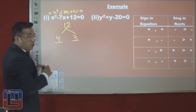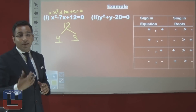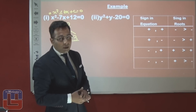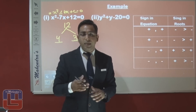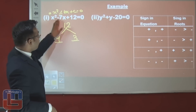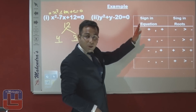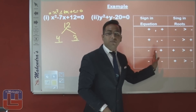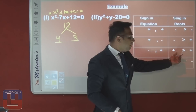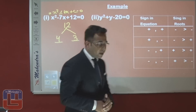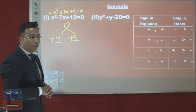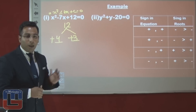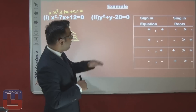We know the roots will be 4 and 3 in magnitude, but we need to determine their signs. For this we use a sign table. The equation x² − 7x + 12 is in the form minus-plus, so according to the sign table, both roots will be positive: +4 and +3. These are the two roots of x.